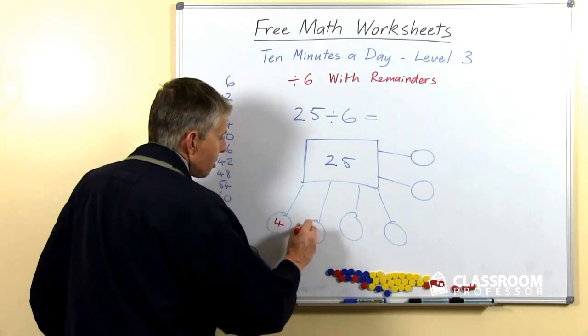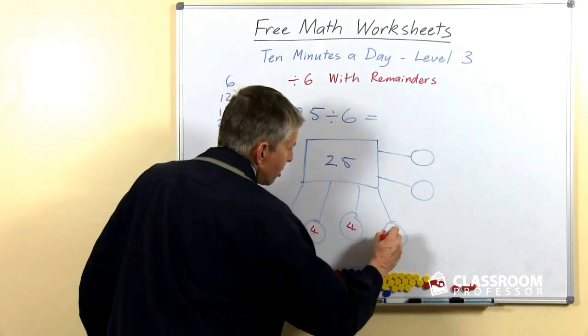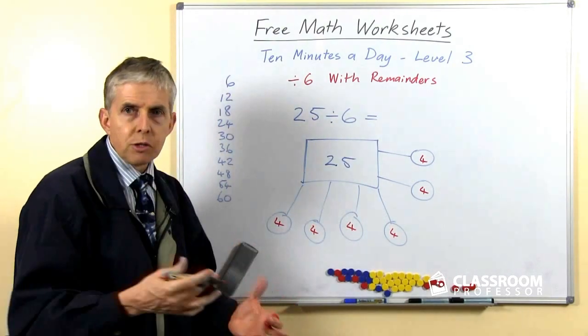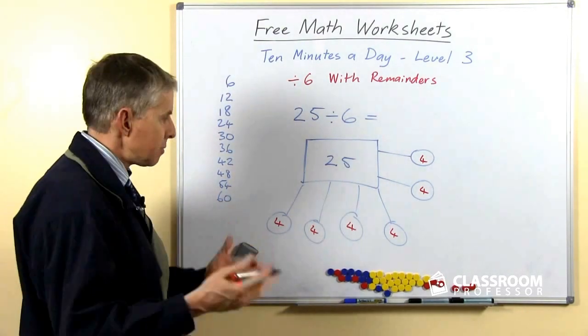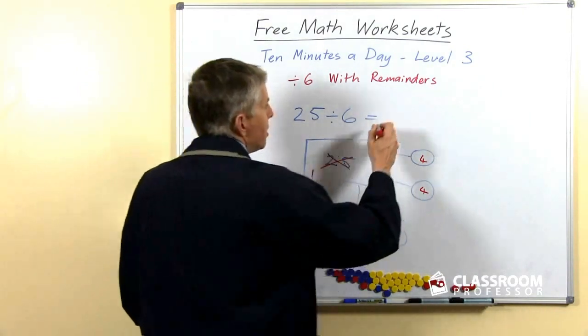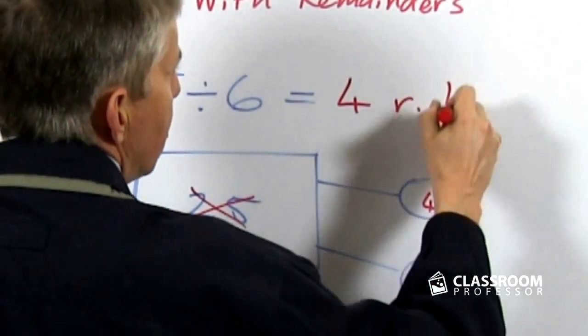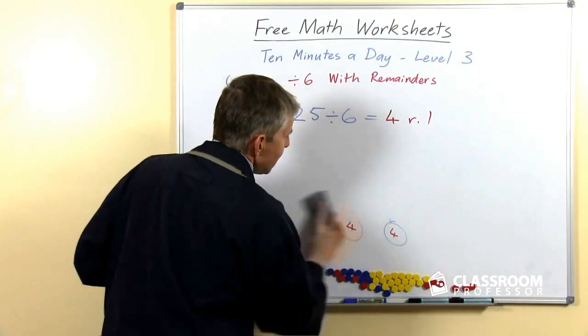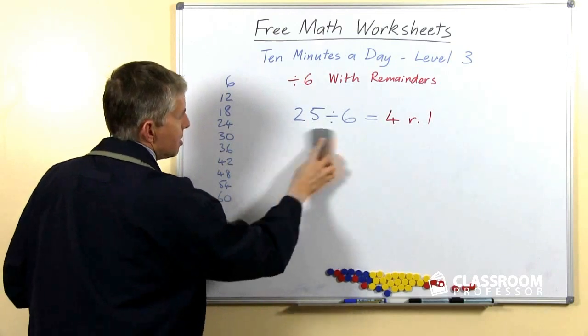So ultimately we want a student to be able to say, well that's 4, so we can write 4 in each one and then say, how many is that? 4 times 6 is how much? 24. How many are left over after we've taken those away? Obviously there's 1 left, and so the answer is 4 remainder 1. By the way, I don't mind how you write the remainder. That's the way I usually write it, just an R.